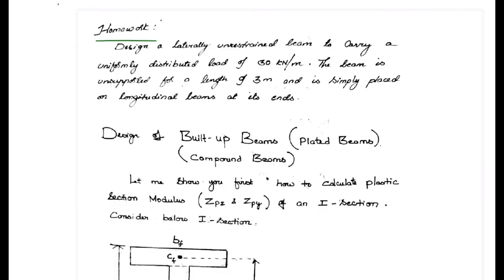This is another exam homework question. This is laterally unrestrained beam to carry a uniformly distributed load of 30 kilonewtons per meter. The beam is unsupported for a length of three meters and it is simply placed beam.